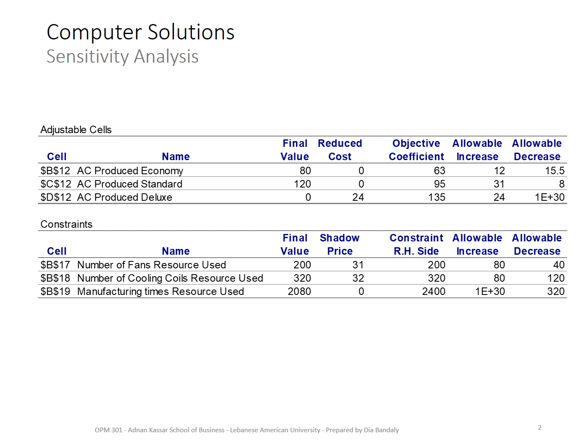I showed you very quickly the sensitivity report when I generated it during my demo. I told you that it created a new sheet for you. And here we go. This is it. In order to be able to read it, we need to understand what this term means. Allowable increase, allowable decrease, shadow price, etc. But before I start with the difficult part, let's start with the easy part.